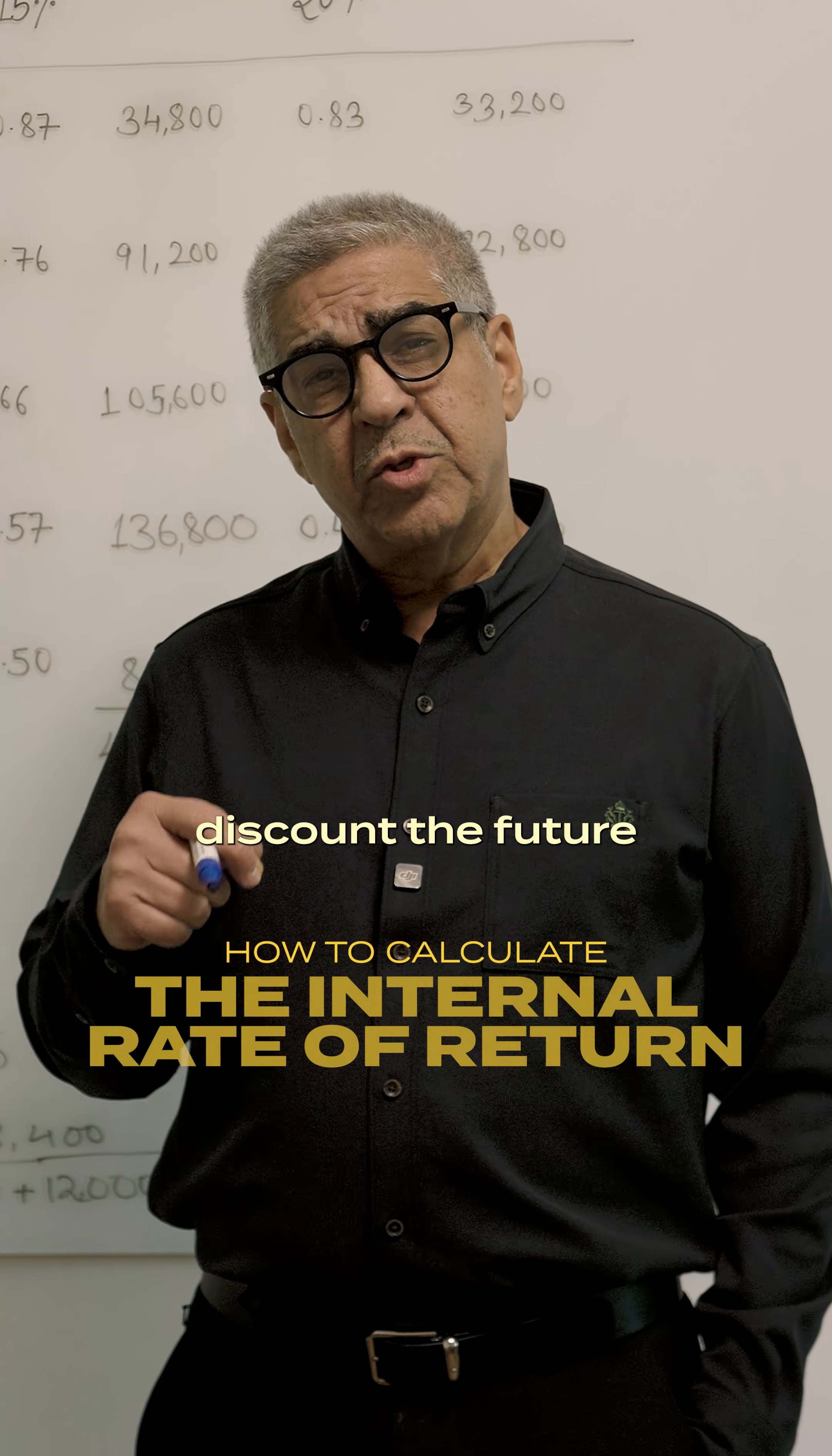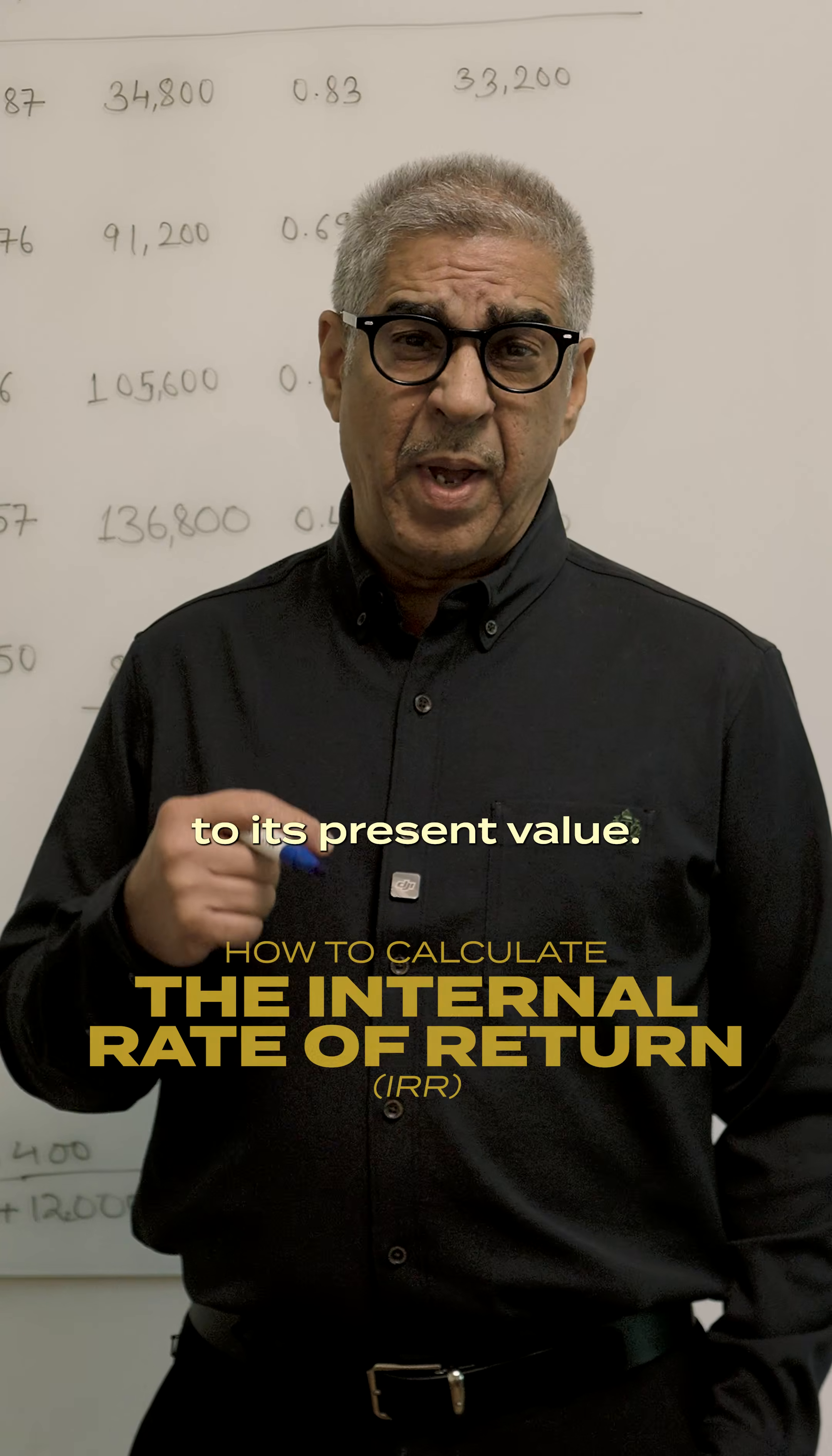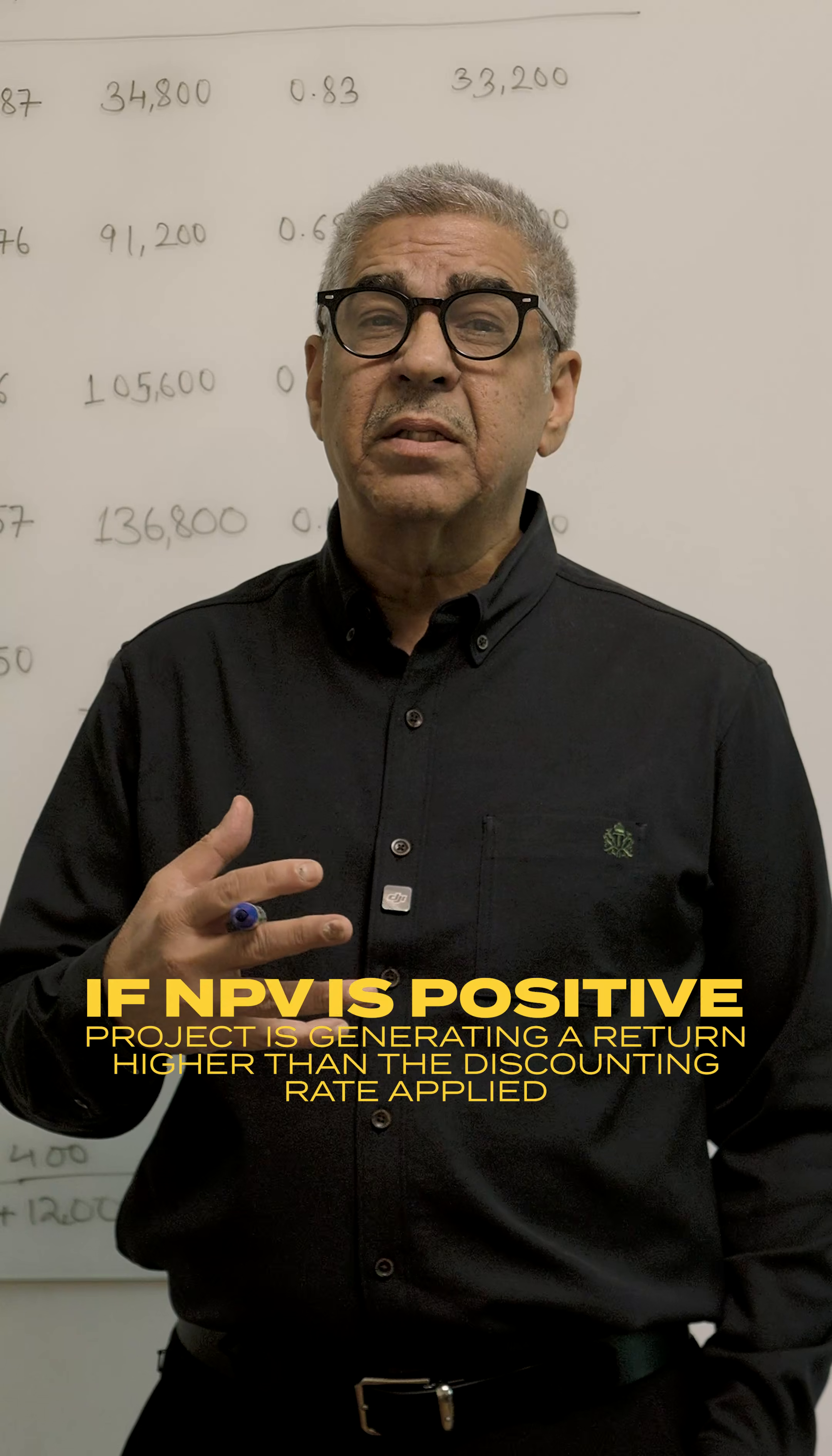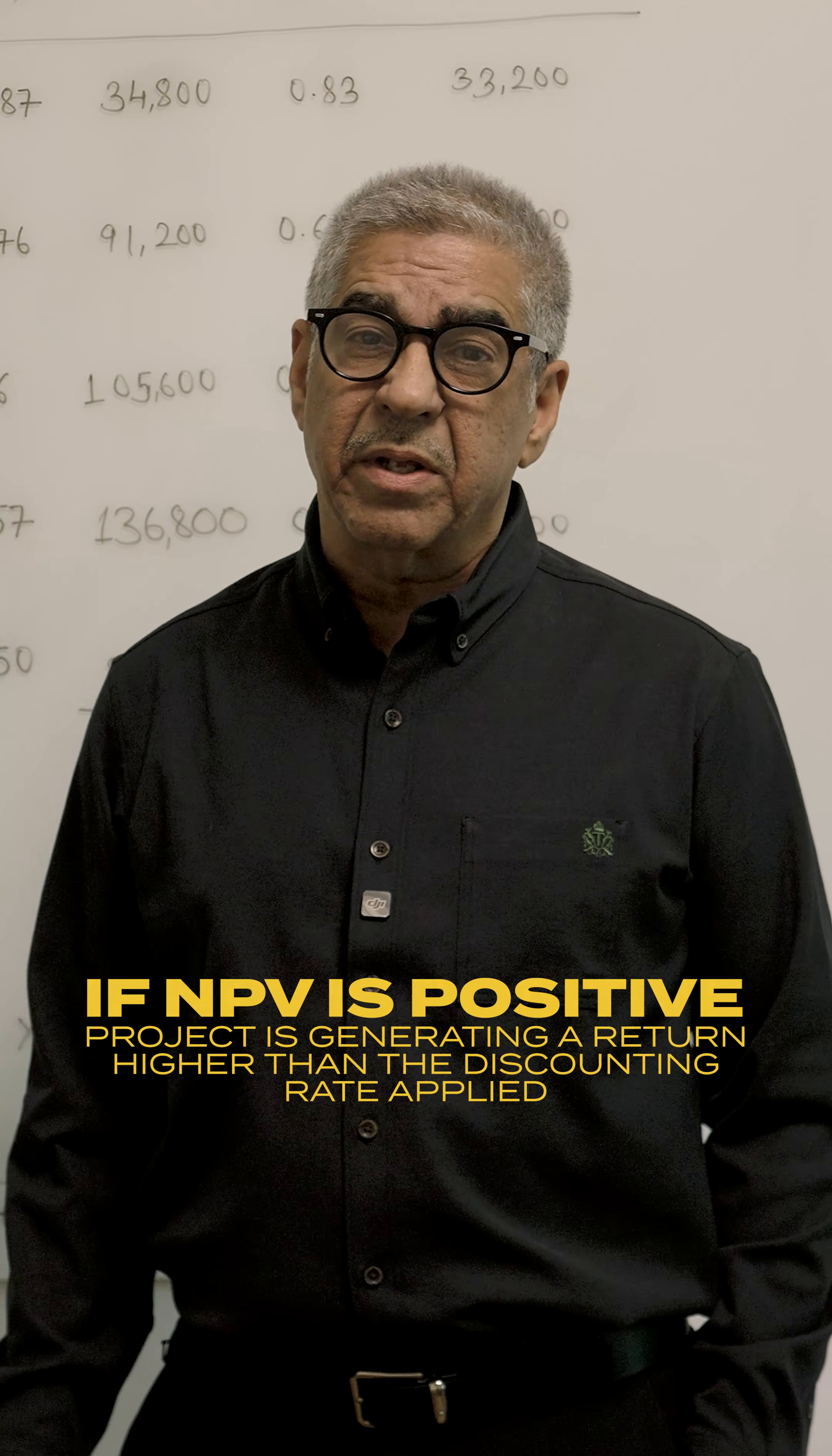When you discount the future cash flows of a project and bring it down to its present value, if the NPV that you arrive at is a positive number, it indicates that the project is generating a return which is higher than the discounting rate applied.